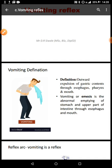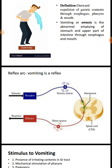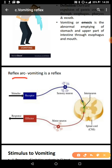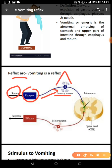Vomiting, like any other reflex, follows what we call a reflex arc. In any reflex, you need to identify the stimulus, the receptors — which convert the energy from the stimulus into an electrical signal, that's the function of the receptor, it's a biological transducer — and then the sensory neurons, also called afferent fibers, which convey electrical impulses from the receptor to the center.